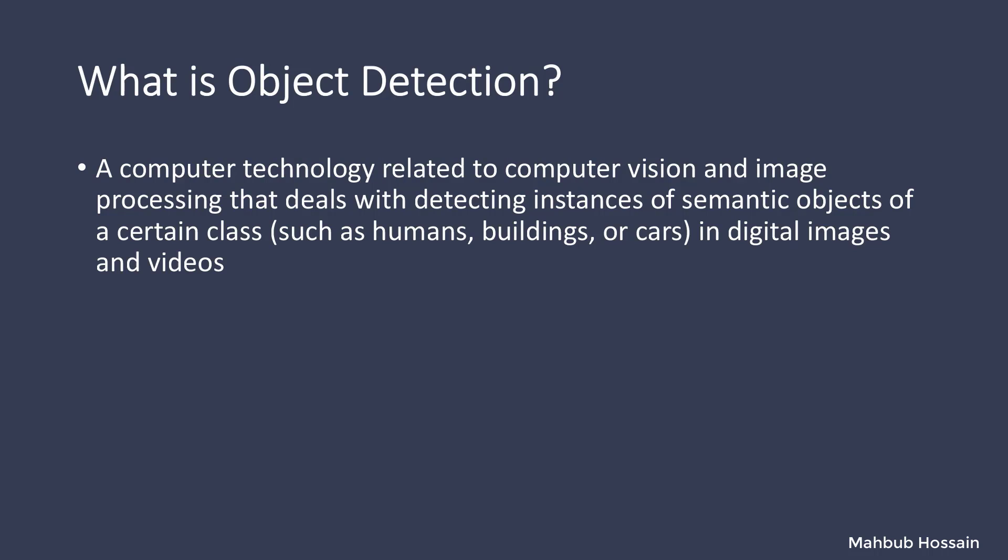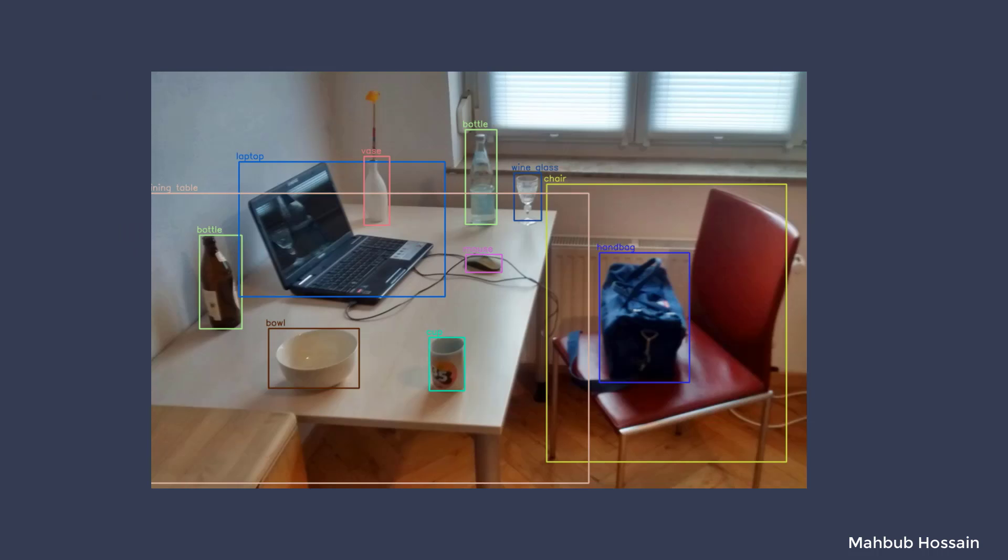First, what is object detection? Object detection is a computer vision task. It involves identifying the presence, location, and type of objects in digital media. Digital media can be images or videos. For example, let's look at these pictures. We can see many objects here such as bottle, laptop, chair, etc. Object detection involves identifying those objects.